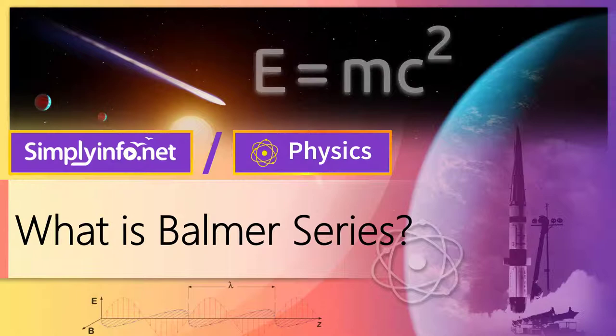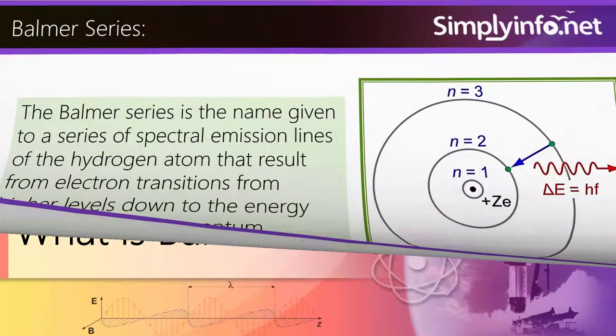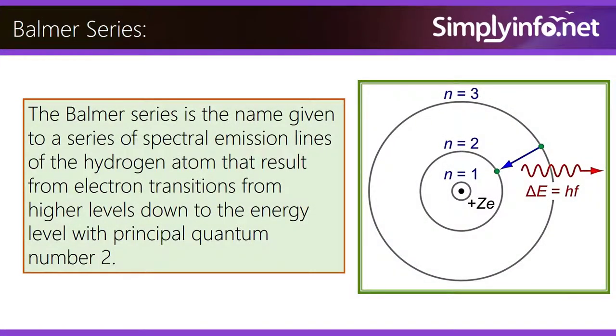The Balmer series is a name given to a series of spectral emission lines of the hydrogen atom that result from electron transitions from higher levels down to the energy level with principal quantum number two.